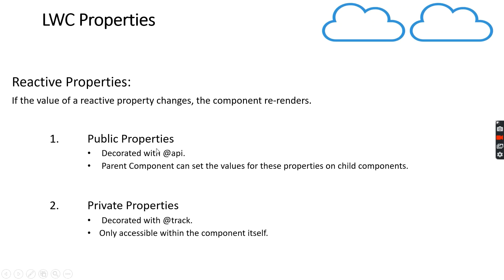LWC properties. There are two types of properties in lightning web components: reactive properties and non-reactive properties. In the case of a reactive property, if the value of the property changes, the component gets re-rendered. Reactive properties are of two types: public reactive properties and private reactive properties.